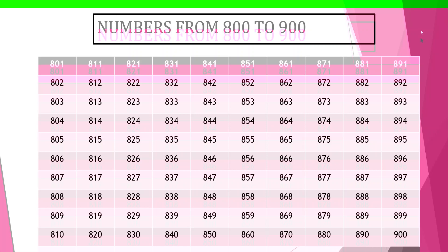Let's begin. You have to count the numbers from 891 to 900. 891, 892, 893, 894, 895, 896, 897, 898, 899, 900.